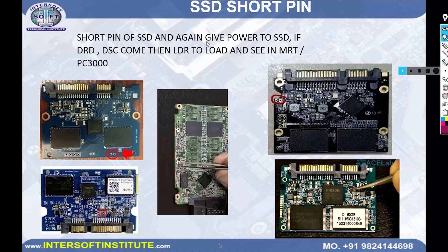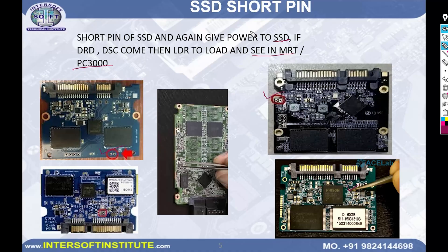Next, the short pin procedure. In an SSD there are two pins that can be shorted to disable the NAND. To disable the NAND, short these two pins. You can find the short pin locations on the SSD — short pin one, short pin two, short pin three. In MRT PC3000 algorithms they reference this in software. When the SSD is continuously busy, you need to short these pins at that time.